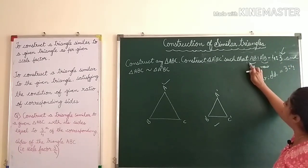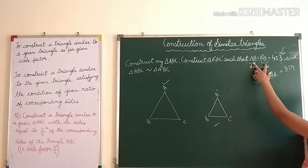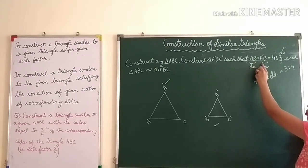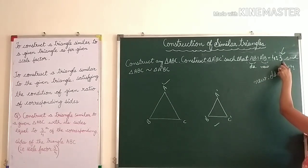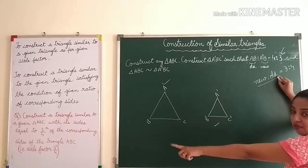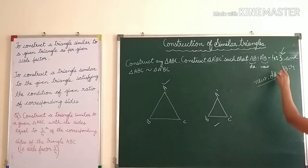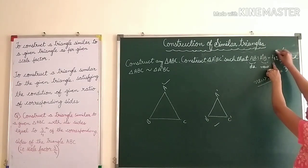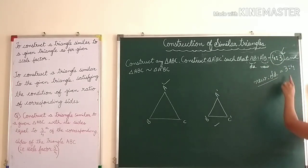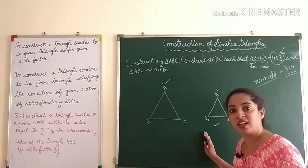They can confuse you here, so read very carefully. In the question you might see 4 : 3, but actually you have to draw 3/4. For finding the scale factor, always write new to old. So here the question shows 4 : 3 but you have to draw three-fourths. I hope this is very clear — now let's start the construction.